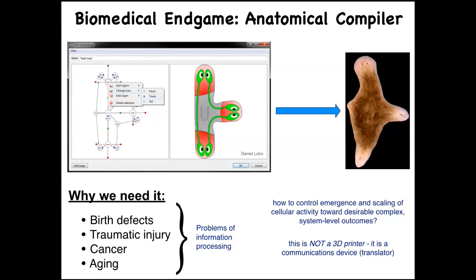The end game is the anatomical compiler: someday we'll sit in front of a computer, draw the plant, animal, organ, or biobot we want, and the computer will compile this description into stimuli given to cells to build exactly what was drawn. Birth defects, failure to regenerate after injury, cancer, aging — all of this would be addressable if we knew how to convince a group of cells to build something specific.